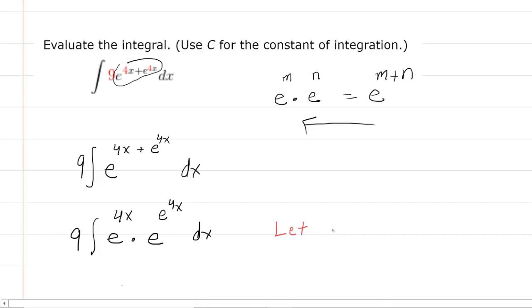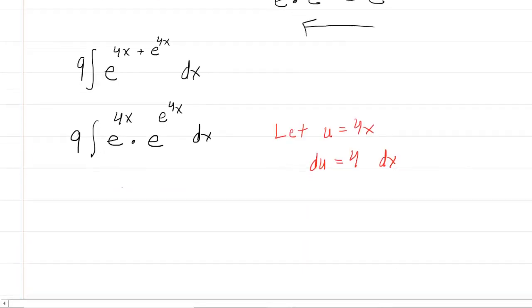We're going to let u equal 4x. And then if we differentiate both sides of that equation, we get du is equal to 4 dx. And then we can actually multiply both sides by 1 fourth so that we have 1 fourth du is equal to dx. So now we're going to rewrite our problem in terms of u.